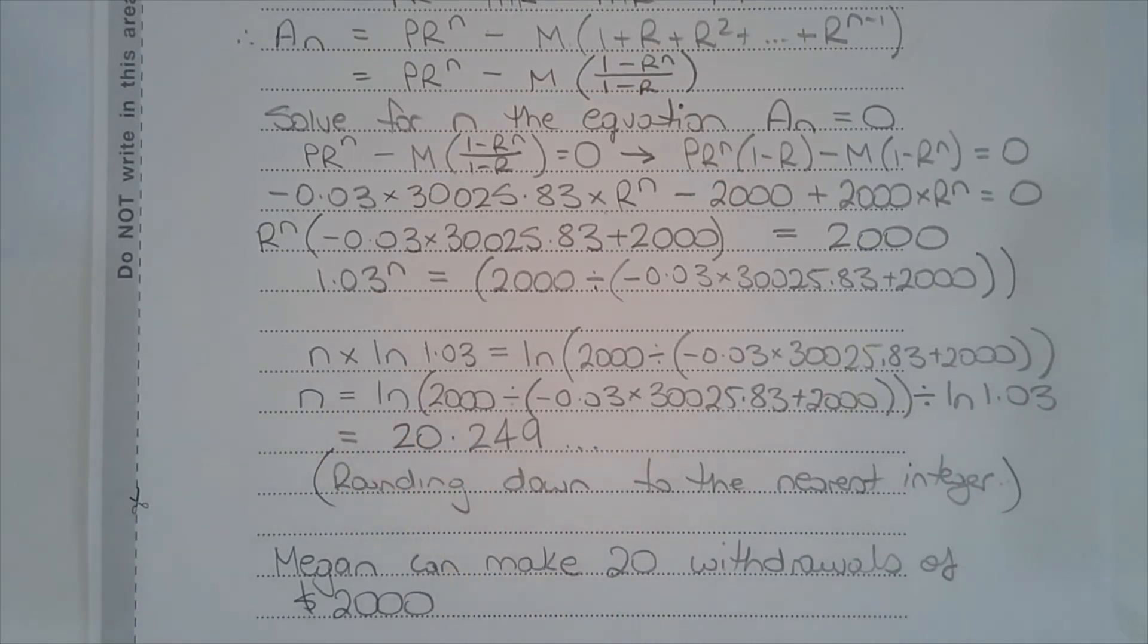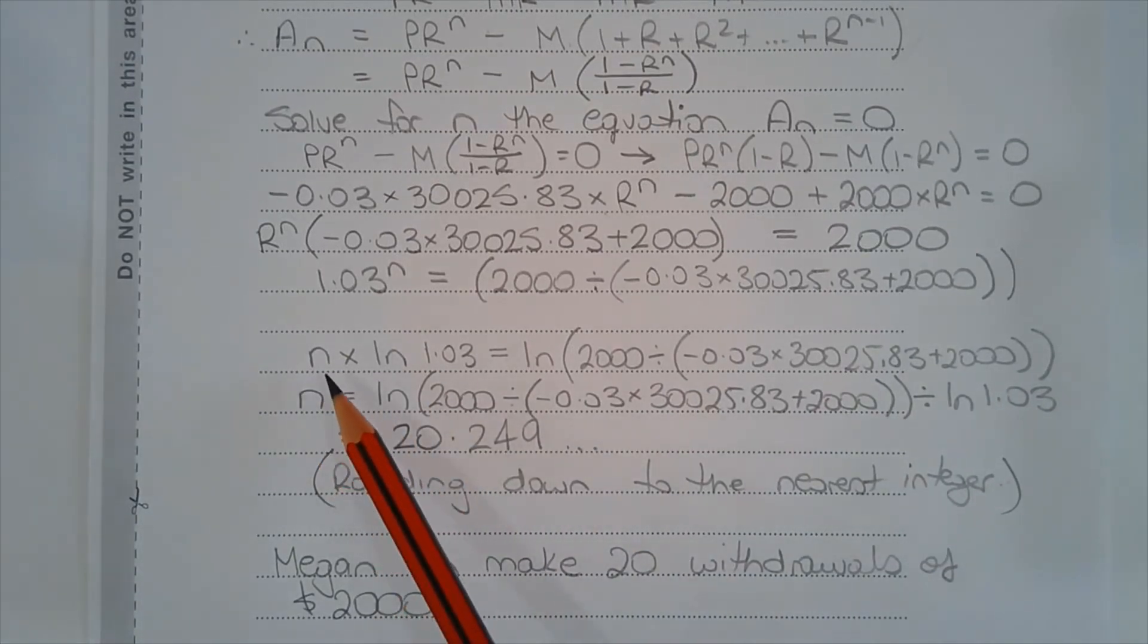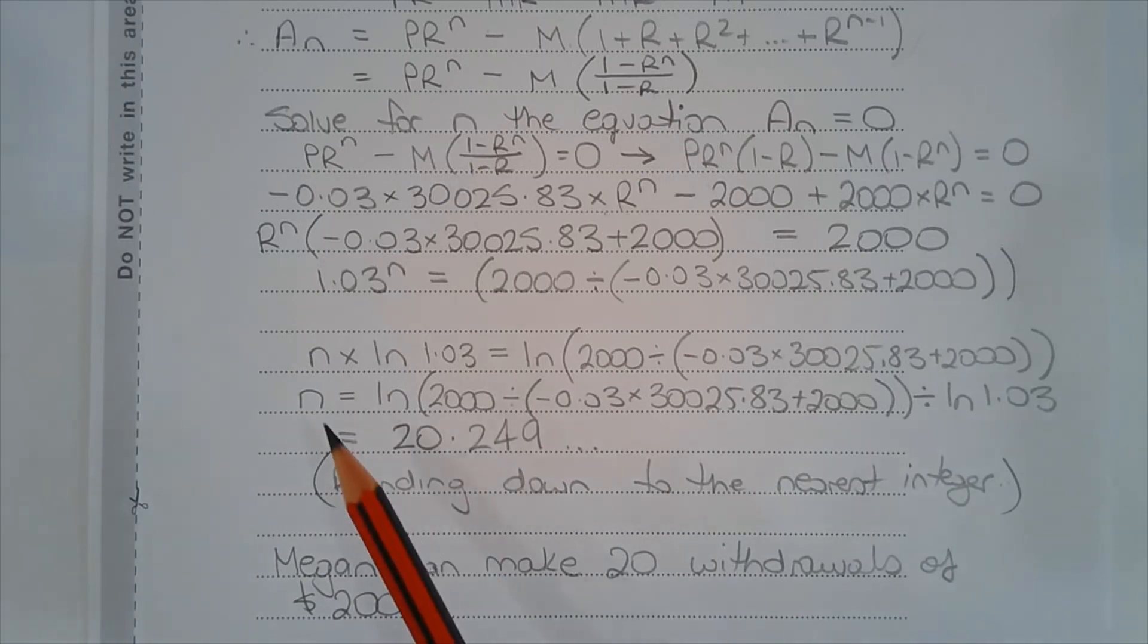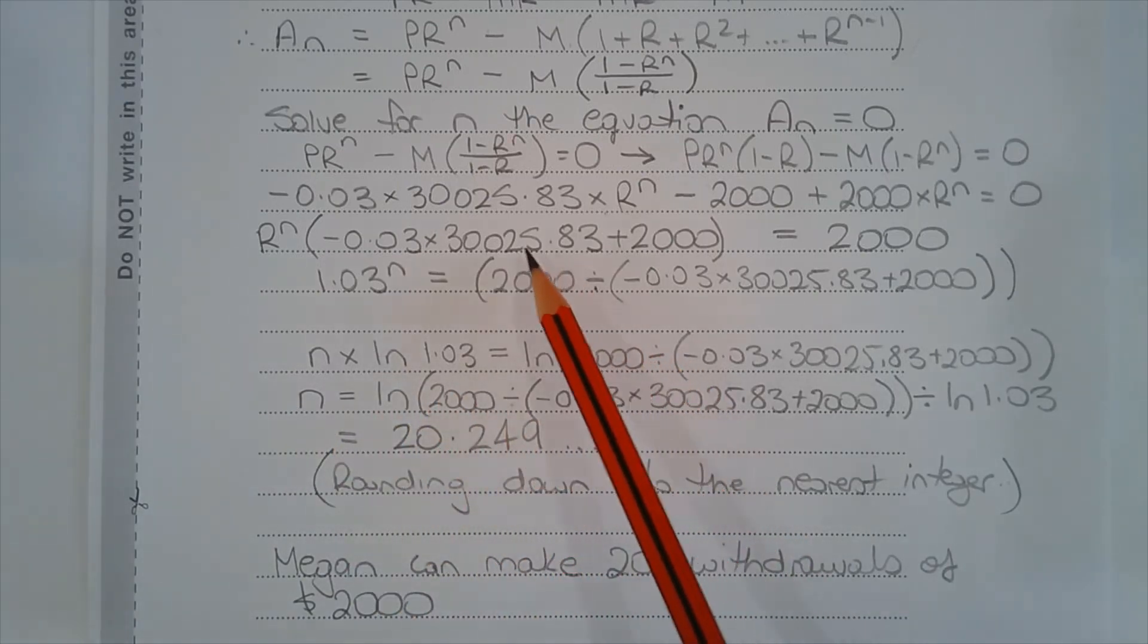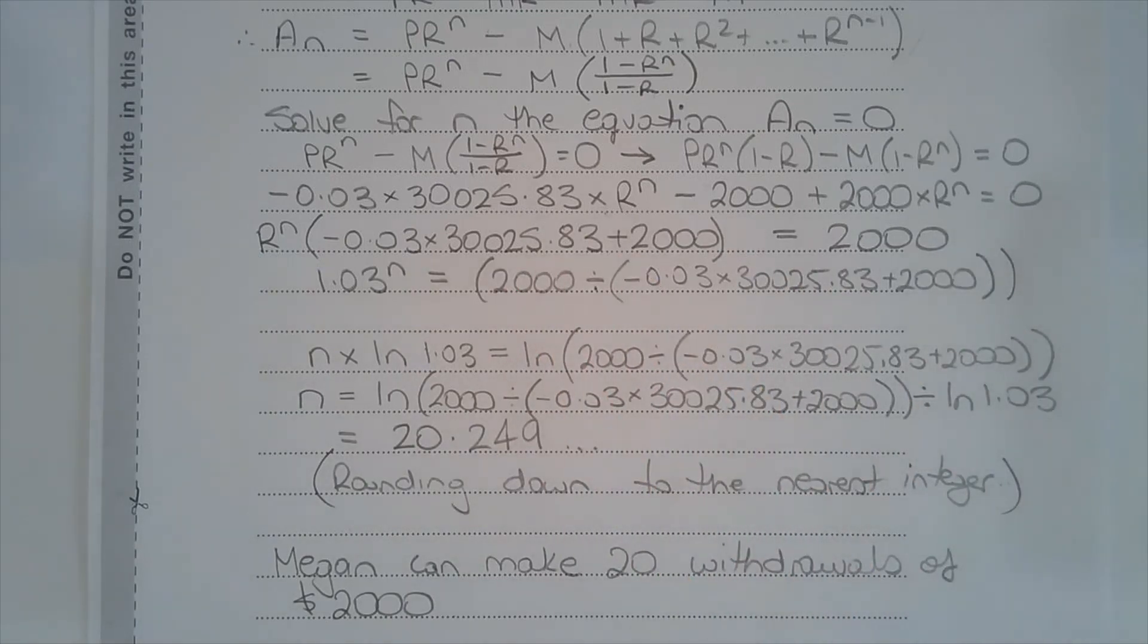Applying logarithms to both sides to make N the subject of the formula, we have N multiplied by LN of 1.03 is equal to LN of this expression. Dividing both sides by LN of 1.03, we have N is equal to 20.249.